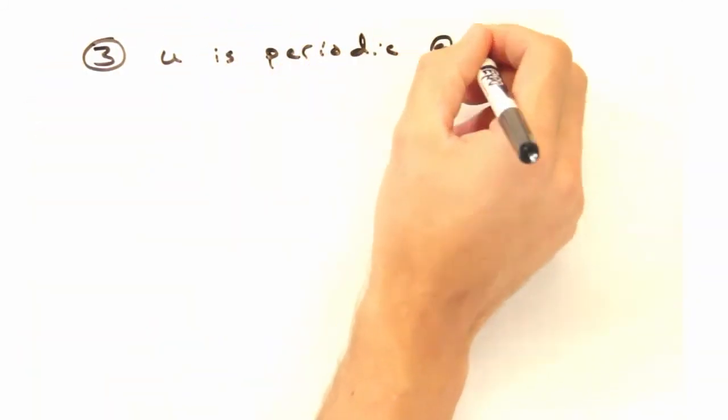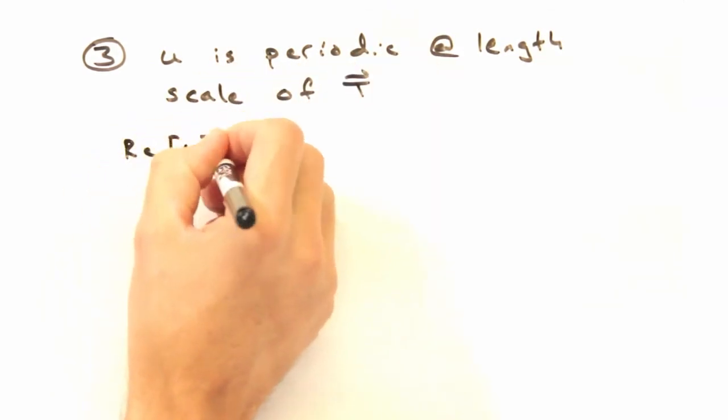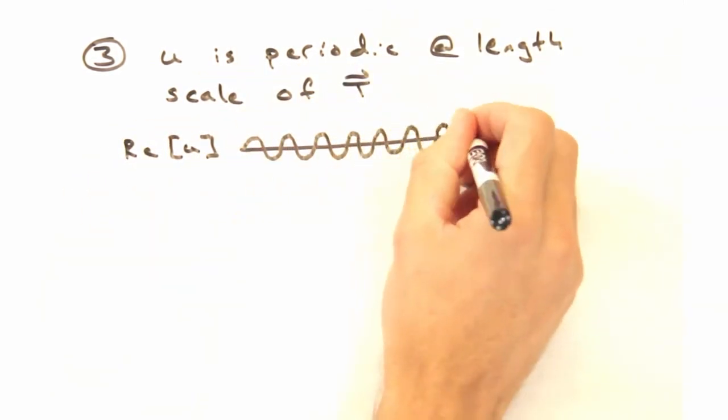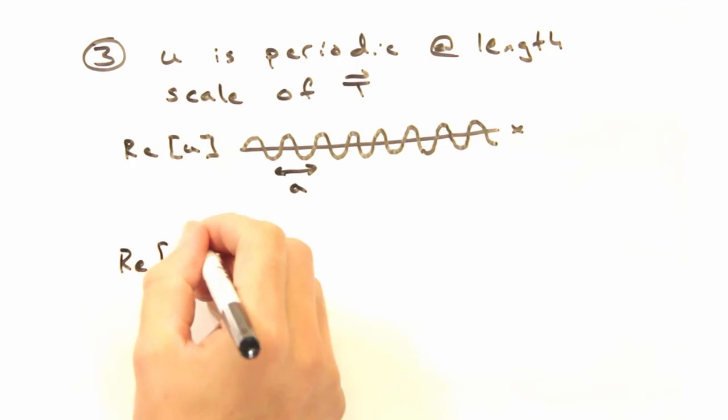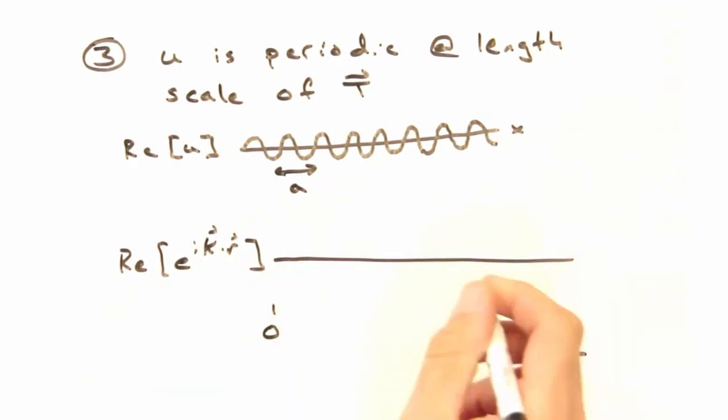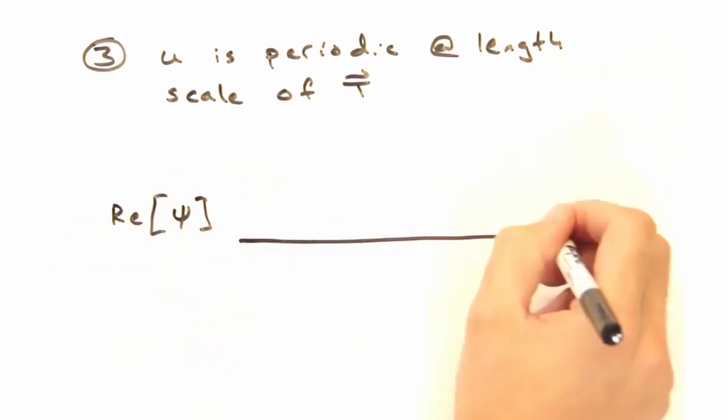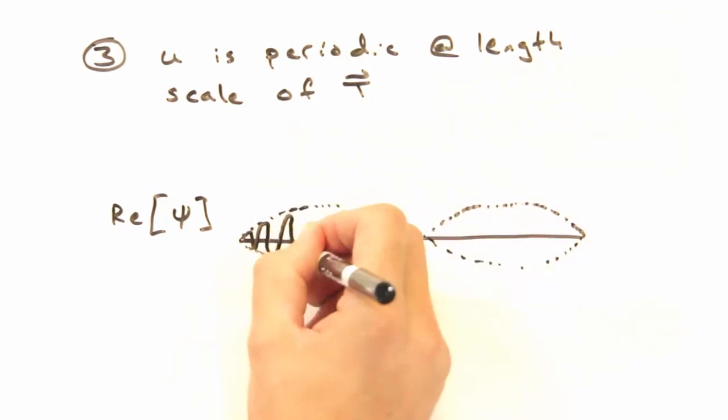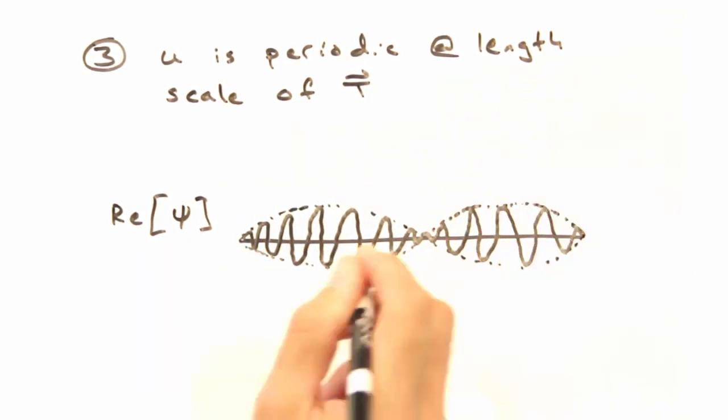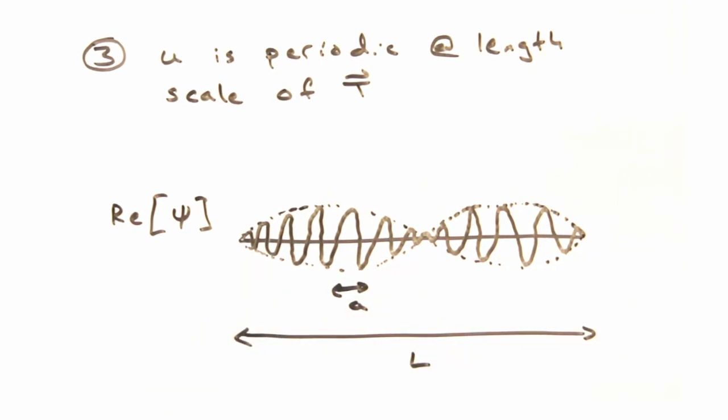And so the third comment we want to make is about visualizing our block waves. U is ultimately some periodic wave that repeats at the atomic scale while the real part of e to the i k dot r is periodic on the sample scale. Multiplying these two waveforms together, we get the real part of our block wave, and this allows us to visualize how the wave function is modulated.